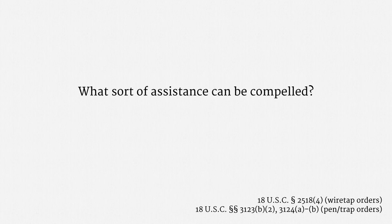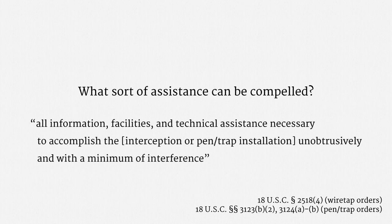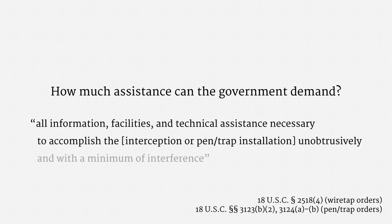The statutory text reads that the government can compel all information, facilities, and technical assistance necessary to accomplish the interception or pen trap installation unobtrusively and with a minimum of interference. That's a mouthful. The first part asks just how much assistance can the government demand. The text of the statute sure seems broad — all the assistance that's necessary. Unfortunately, at the time of recording, there really isn't any case law on the issue. The only case on point is United States against Lavabit.